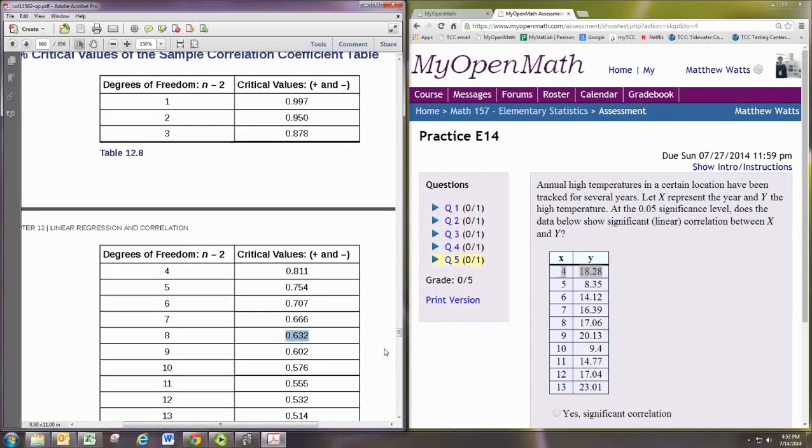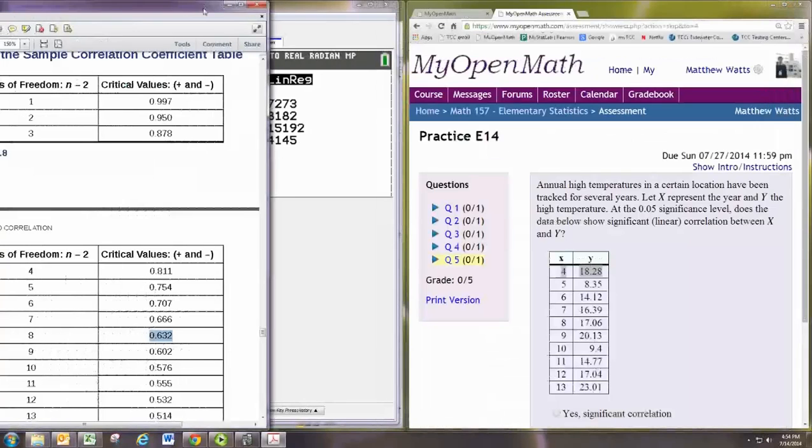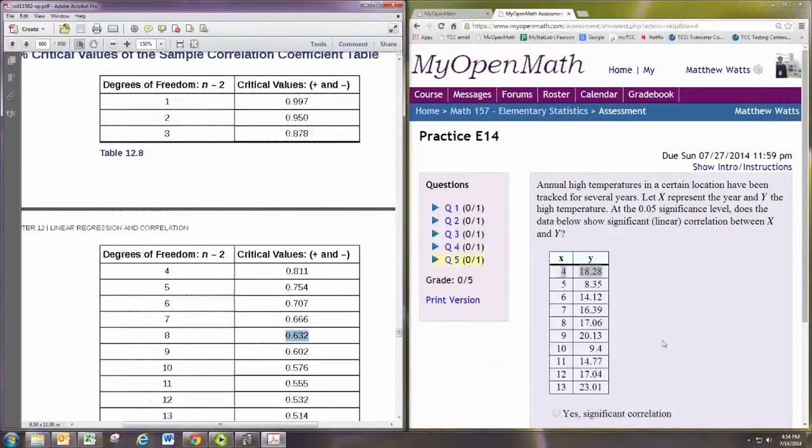Alright so let's compare and see our r value is in fact smaller than that. So 0.363 is less than 0.632 so we didn't make that cutoff. And so we would say there is not significant linear correlation. So no.